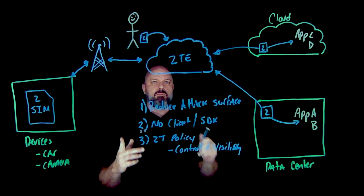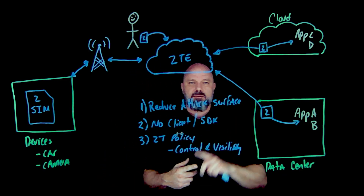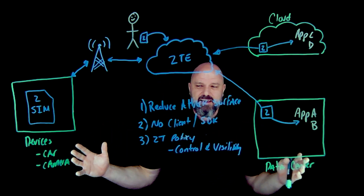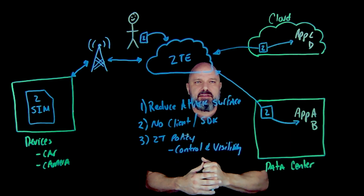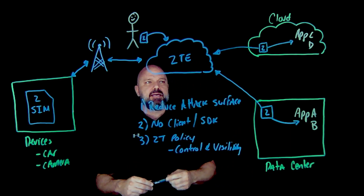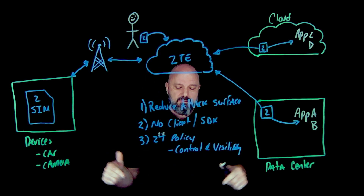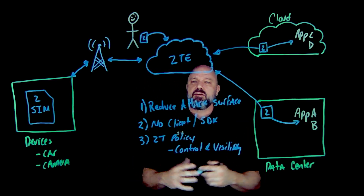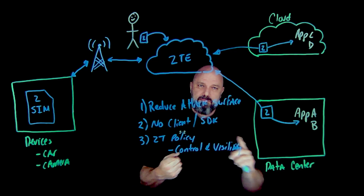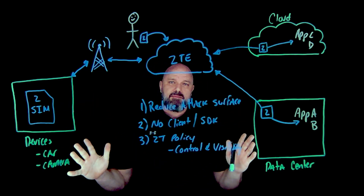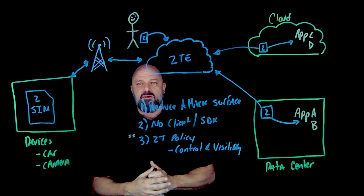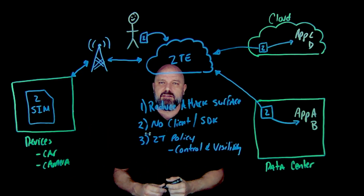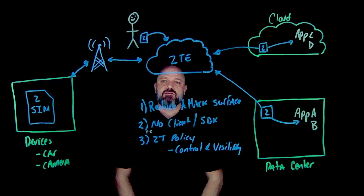ZScaler cellular gives us the ability to reduce the attack surface, eliminate lateral movement, remove the need for a client or SDK, and enforce zero trust policy for complete control and visibility — all while driving down risk. Time to value is much quicker, and you'll save money by not dealing with patches, maintenance, upgrades, and scale events. Just set a policy and forget about it. Reach out to your local sales team — we'd love to talk to you more about ZScaler cellular.